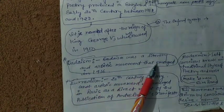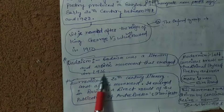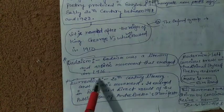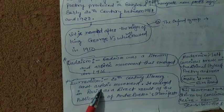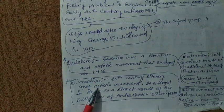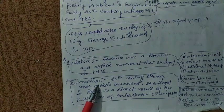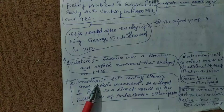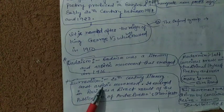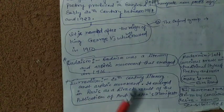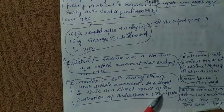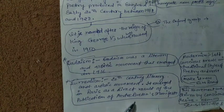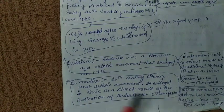Dadaism was a literary and artistic movement that emerged in 1916. Surrealism is a 20th century literary and artistic movement that emerged in Paris as a direct result of the publication of André Breton's Manifesto. These are all parts of modernist writing and ways of expression that we need to understand in order to understand what modernist writing and the Modern Age is.